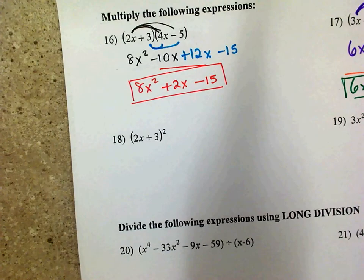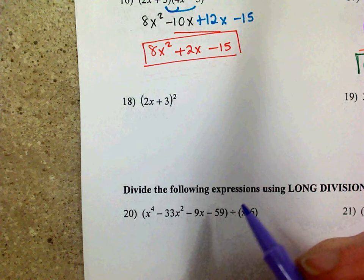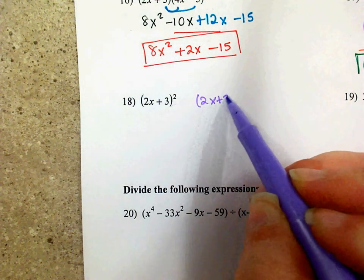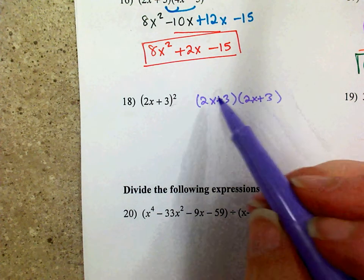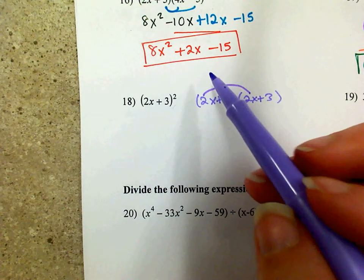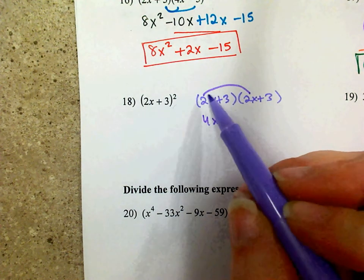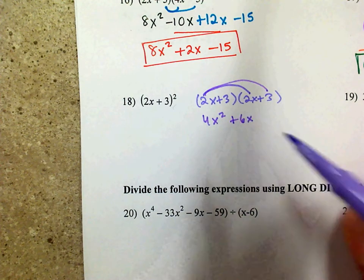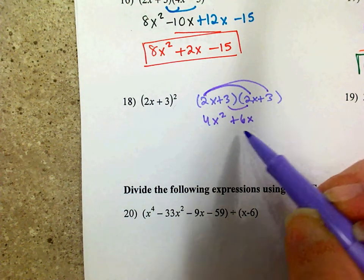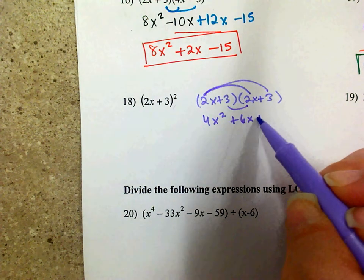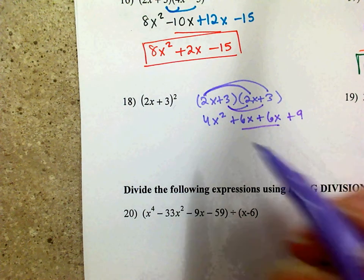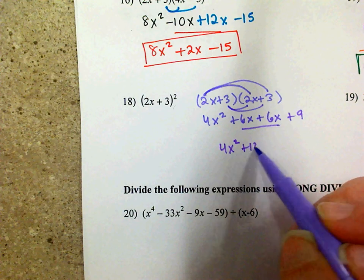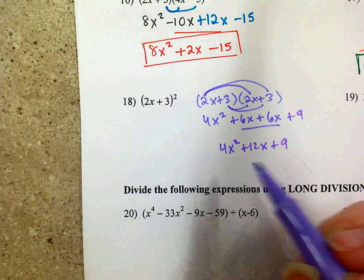On 18, you've got 2x plus 3 quantity squared. That actually means you multiply 2x plus 3 times 2x plus 3 — multiply it by itself twice. So 2x times 2x is 4x squared. 2x times 3 is 6x. 3 times 2x is 6x. And 3 times 3 is 9. Combine like terms: 4x squared plus 12x plus 9. There's my answer.